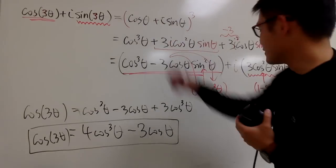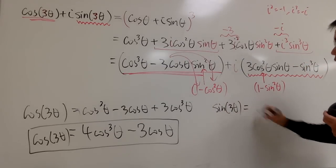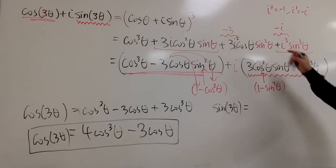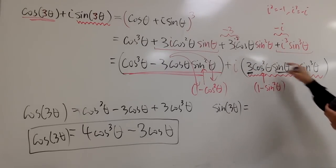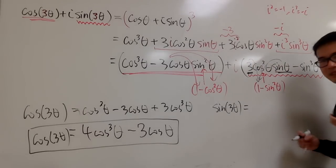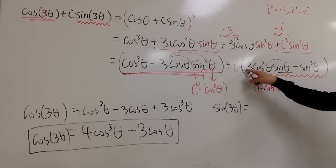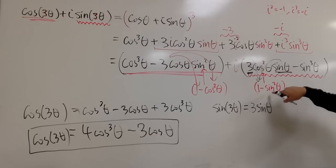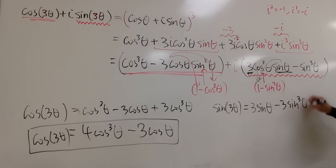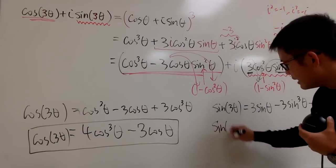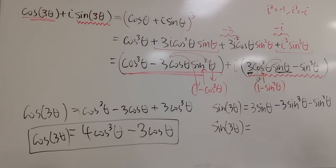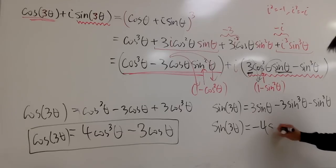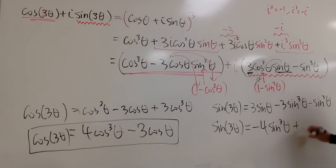Now let's do the one for sine. Sine of 3 theta equals — I'll distribute. We have 3 sine theta times 1, which is 3 sine theta. Then 3 sine theta times negative sine squared theta gives minus 3 sine cubed theta. And lastly, minus sine cubed theta. Combining like terms: sine of 3 theta equals minus 4 sine cubed theta plus 3 sine theta. They are really similar to each other.